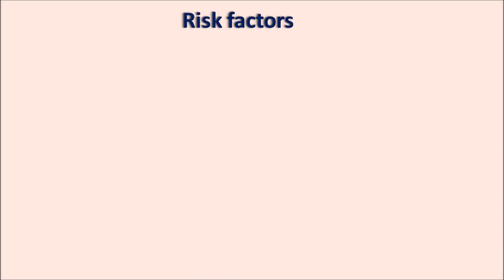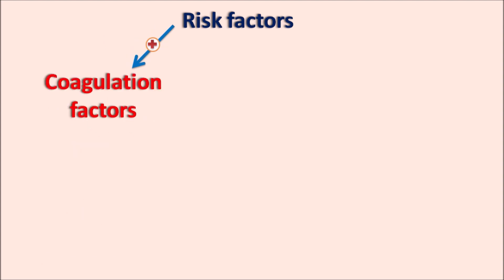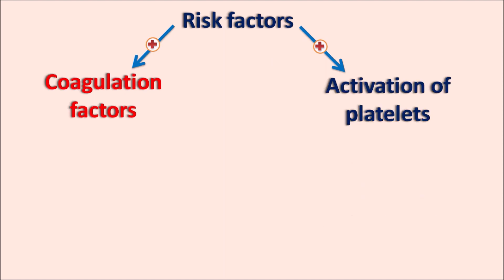Any of the risk factors in the patients can stimulate two pathways. One is the stimulation of the coagulation factors. Different types of coagulation factors are synthesized whenever there is damage to the blood vessel, but in thrombosis they are inappropriately activated. For example, in atherosclerosis, the endothelial dysfunction can stimulate the release of coagulation factors and can also activate the platelets. When this coagulation cascade is activated, it releases one of the important coagulation factors: factor IIa, which is also called thrombin.